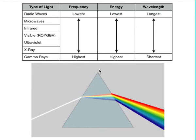I want to remind you about the electromagnetic spectrum. You should remember the different types of light: radio waves, microwaves, infrared, visible, ultraviolet, x-ray, and gamma rays. I've arranged them here in order of lowest frequency, lowest energy, and